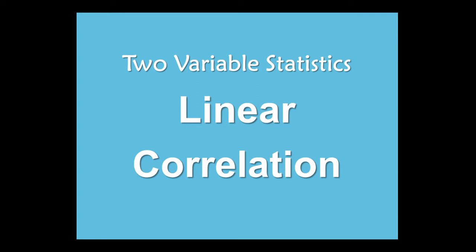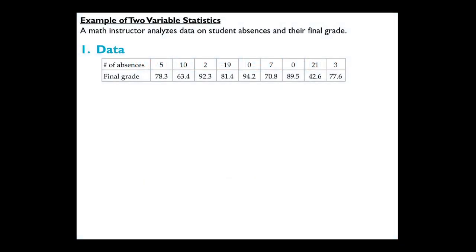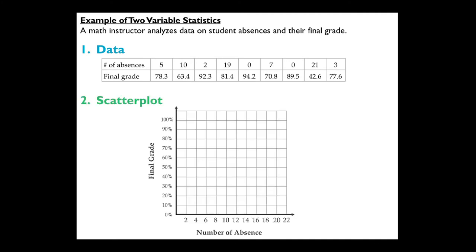Let's dive into the actual content. We're moving into two-variable statistics. In this section, 10-1, we're going to talk about linear correlation. A math instructor analyzes data on student absences and their final grade. With two-variable statistics, we look at two things for each subject. Once we have the data, we plot it on a coordinate plane — what we call a scatter plot — which gives us a visual of patterns we may see.